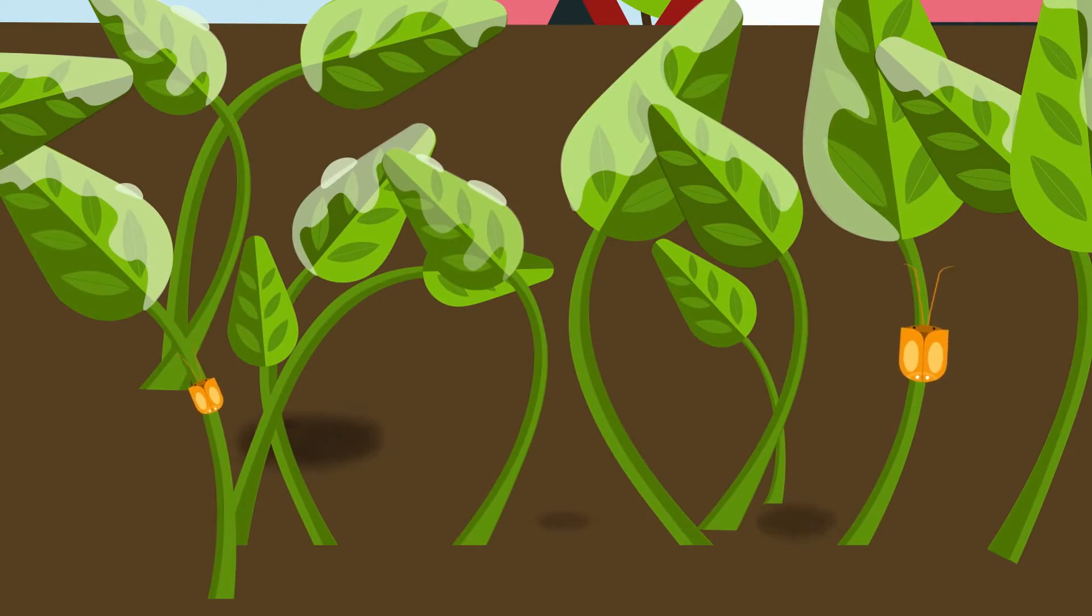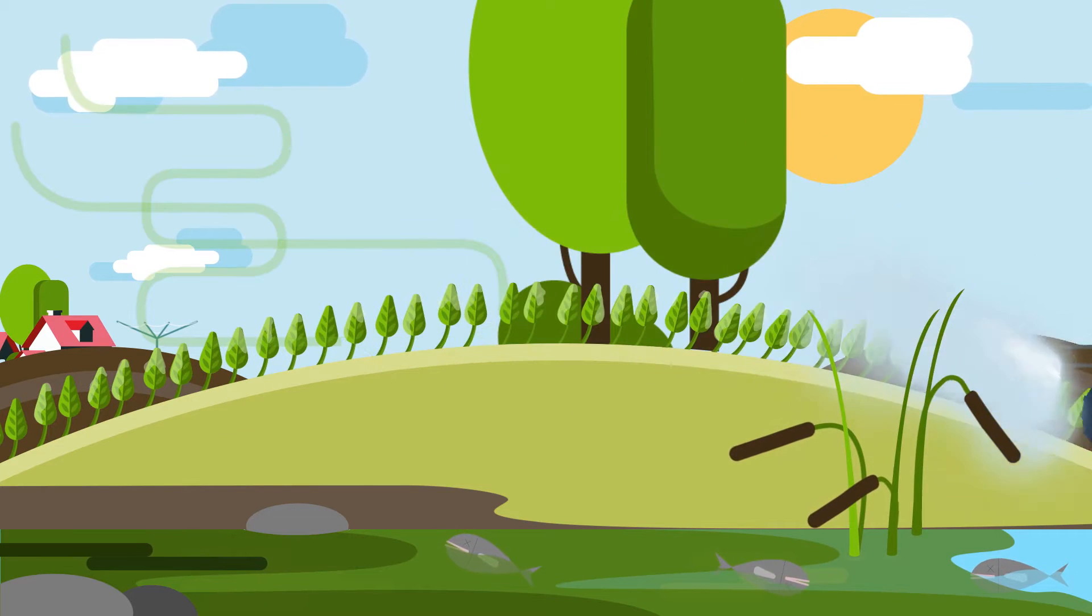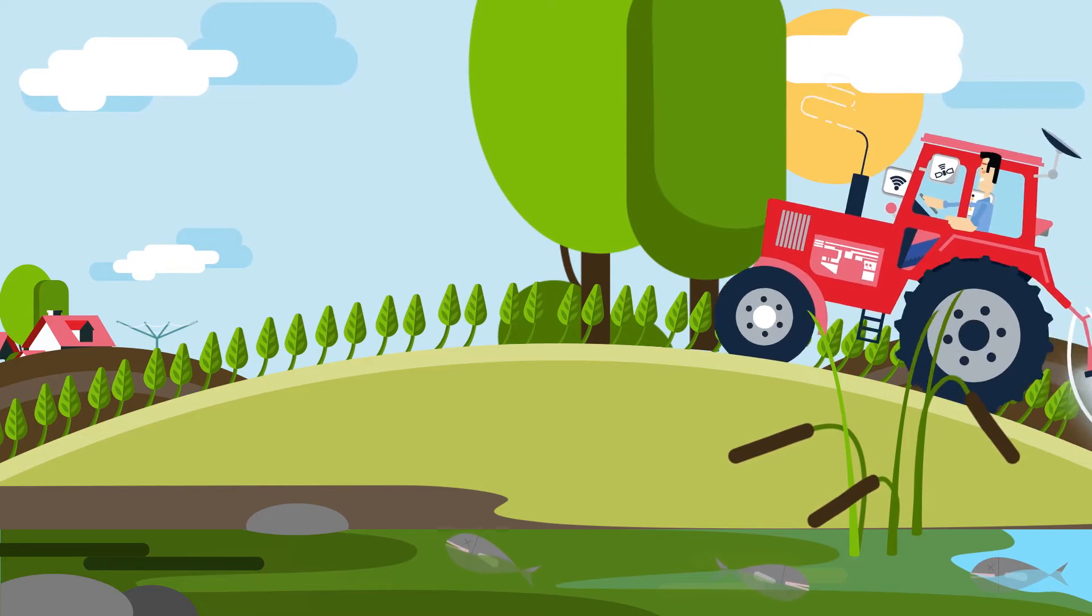No big heavy droplets that fall off the leaves, but a fine mist sprayed directly between the crops.